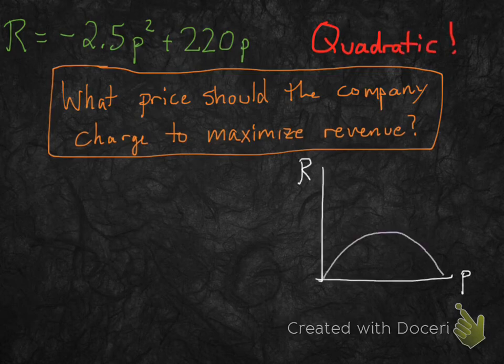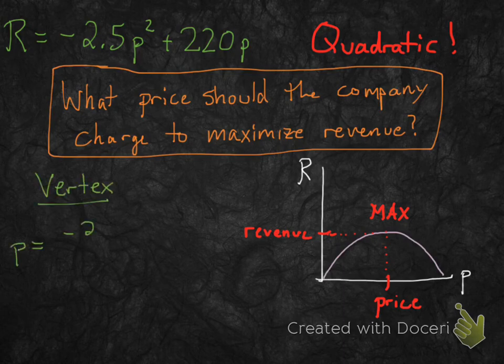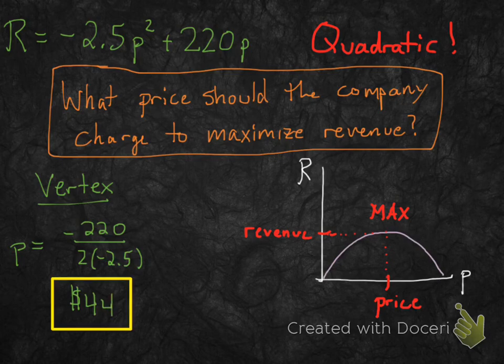If you graph it, it's a downward-facing parabola because the coefficient in front of p squared is negative. So there's clearly a maximum point on this revenue graph, and that's what we want to find. For a quadratic, all you need to do is use the vertex formula: price equals negative b over 2a. Plug those numbers in and you get $44.